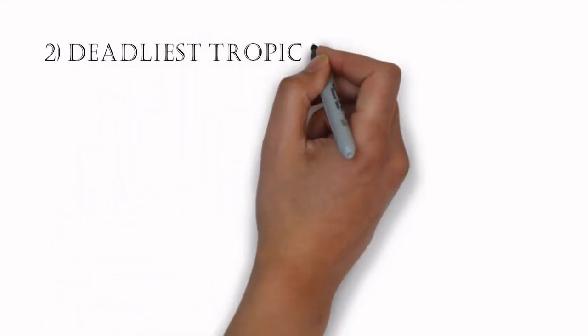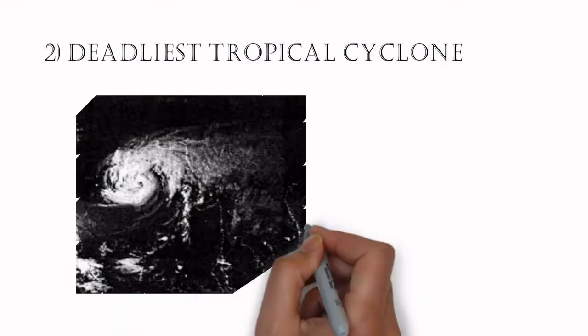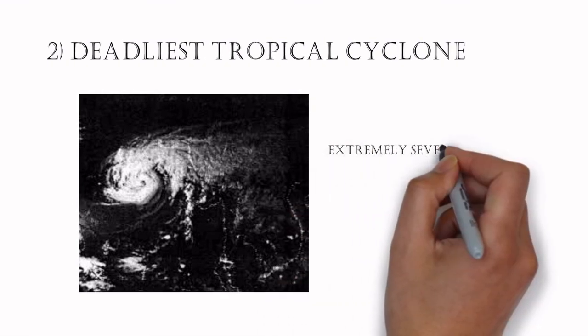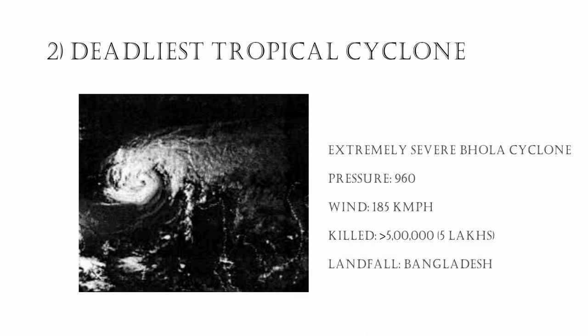The deadliest tropical cyclone in the world is the 1970 extremely severe cyclonic storm Bhola. It made landfall in East Pakistan, today's Bangladesh, and India's West Bengal on November 3, 1970. It had a wind speed of about 185 kmph and minimum surface level pressure of about 960 MB. It killed at least 5 lakh people, mostly due to the storm surge, which led to flooding in low-lying areas of the Ganga Delta.